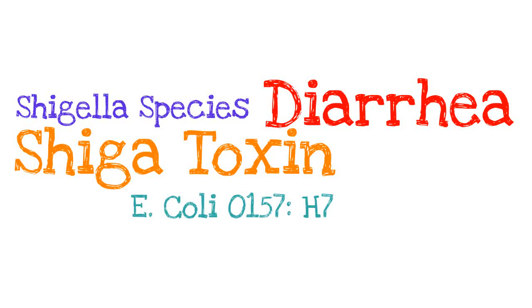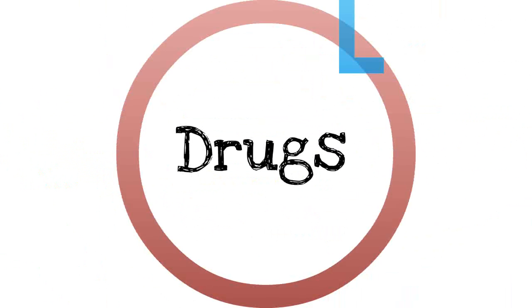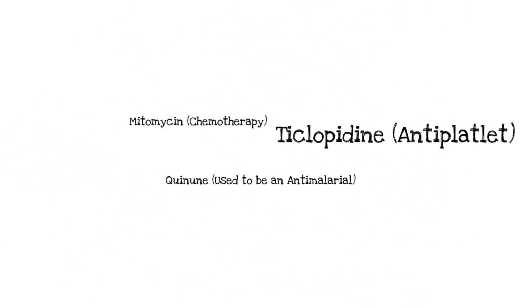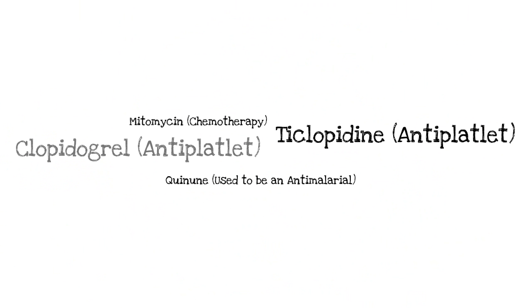The classic symptom associated with an infection such as these is diarrhea. So if you see diarrhea in the stem or meet a patient with diarrhea with TTP-HUS, it's likely infectious. In terms of drugs that cause TTP-HUS: quinine is known to cause it, used to be an antimalarial; mitomycin, a chemotherapy agent; ticlopidine, which is an antiplatelet agent; and clopidogrel, or Plavix, another very common antiplatelet agent used if patients have had an MI or an acute coronary syndrome.